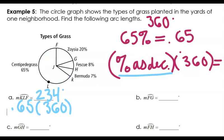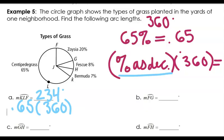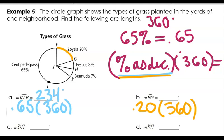The next one it asks about is arc FG. FG is 20%. 20% as a decimal is 0.20. Multiplying 0.20 times 360 is going to give me that arc measurement of 72 degrees.